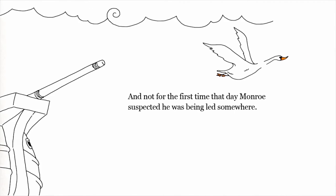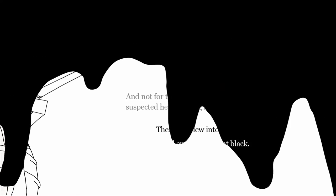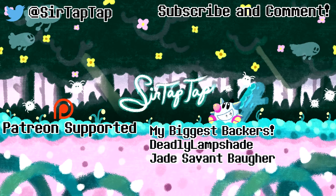The swan was always just out of reach. And not for the first time that day, Monroe suspected he was being led somewhere. Then they flew into a cloud, and everything went black.